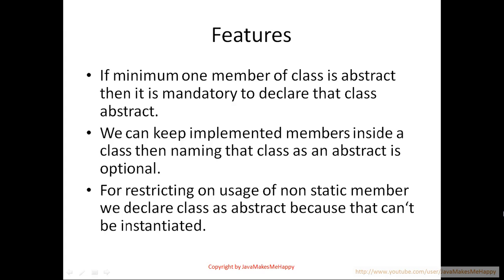For restrictive uses of non-static members, we declare a class as abstract because non-static member uses can be restricted. We declare those classes as abstract to restrict our class from the client, so that a client can't modify our class. We can use the abstract keyword for that restriction.